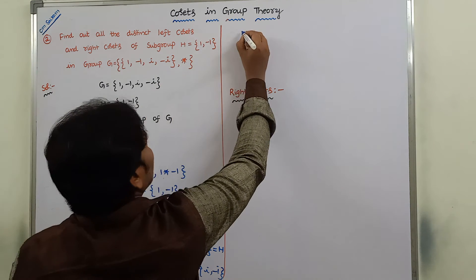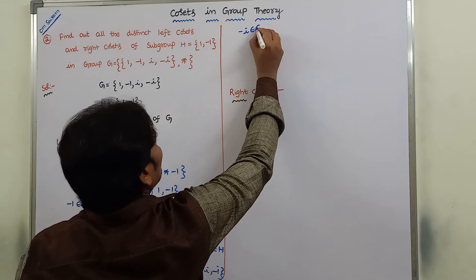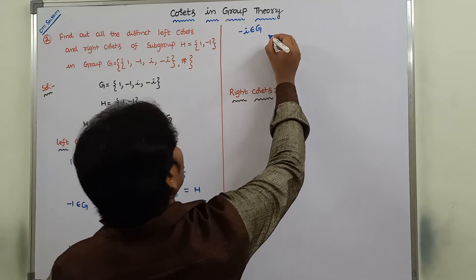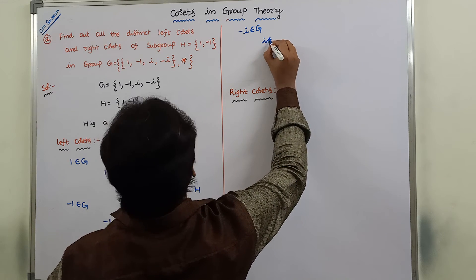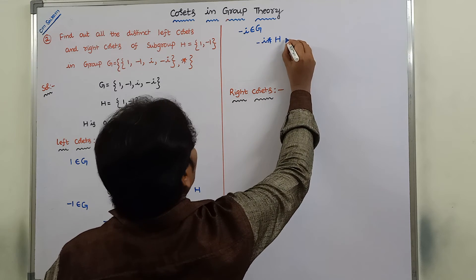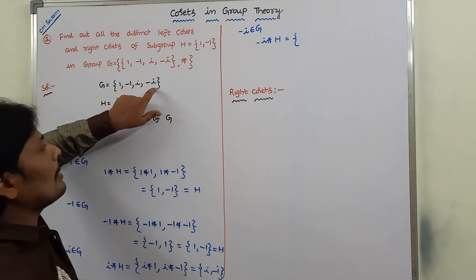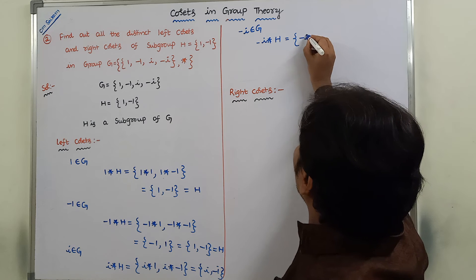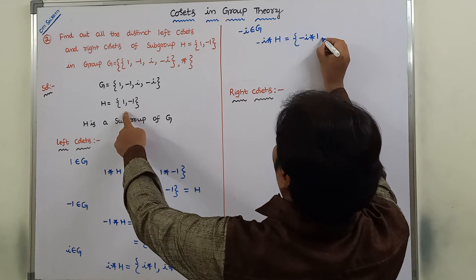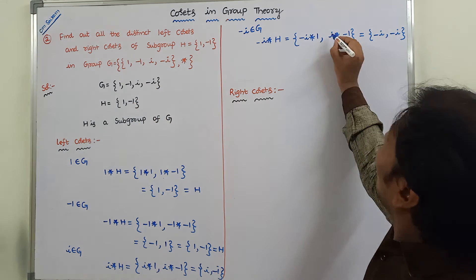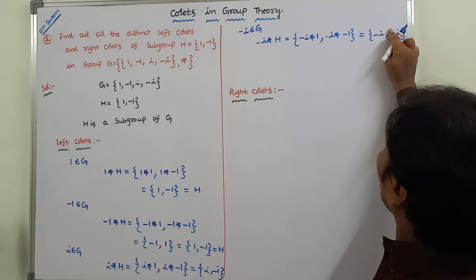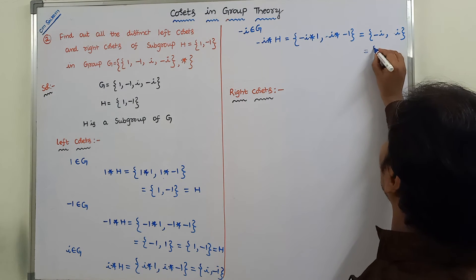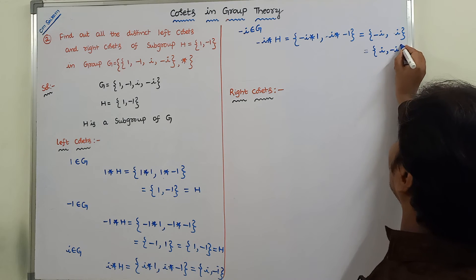Next element is −i. So −i belongs to G, and −i is combined with all the elements of H. We form the left coset: −i · H = {(−i)×1, (−i)×(−1)} = {−i, i} = {i, −i}.